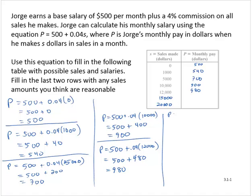So for 15,000, pay would be 500 plus 0.04 times 15,000, which would be 500 plus 600, which is 1,100.